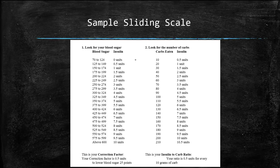In our example, the correction factor is half a unit to lower blood sugar 25 points, and an insulin to carb ratio is half a unit will cover 10 grams of carbohydrate.